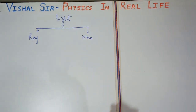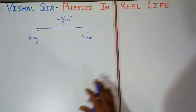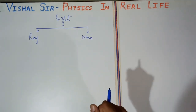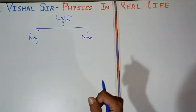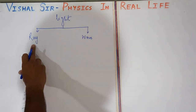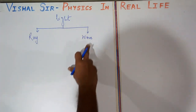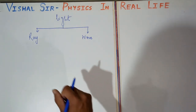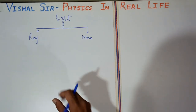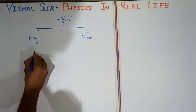Light exists in two forms. In some phenomena it acts as a ray, and in some other phenomena it acts as a wave. In 10th class, only ray optics is important. But if you are in 12th class, then both ray optics and wave optics are important.